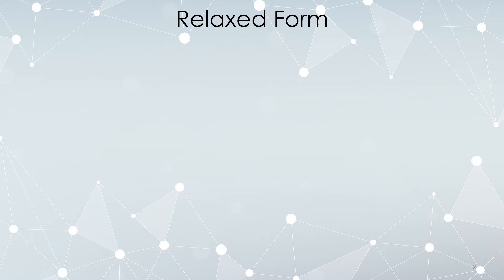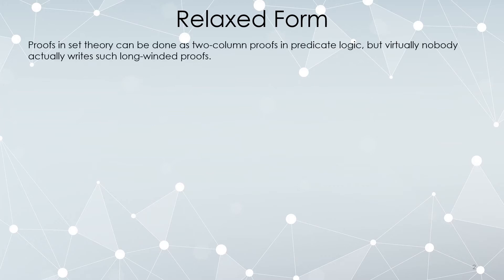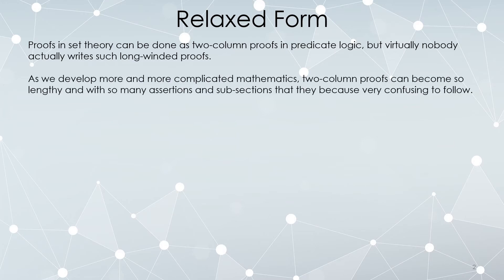Having introduced the intuitive constructions and axiomatic form of things we can do with sets, we're going to start talking about proofs. While proofs in set theory can be done as two-column proofs using the predicate logic statements that underlie all the definitions, very rarely is that actually done — it takes way too long. As we develop more complicated things, two-column proofs can become very long, with so many assertions, subsections, and cross-referencing that they become very difficult and confusing for an actual person to follow.